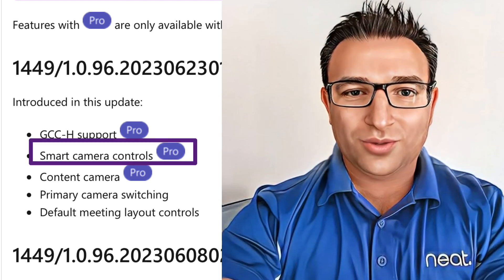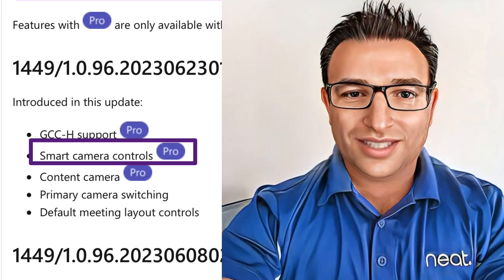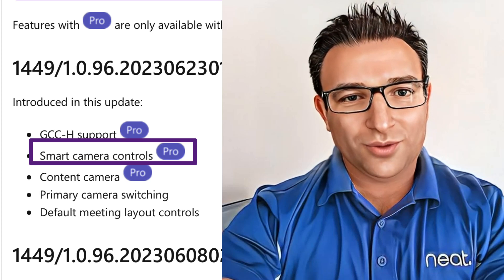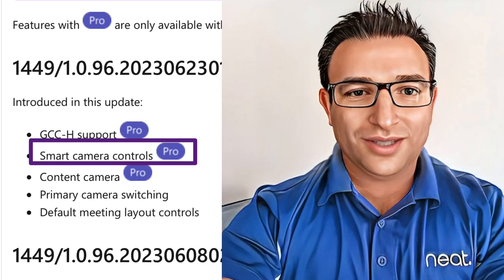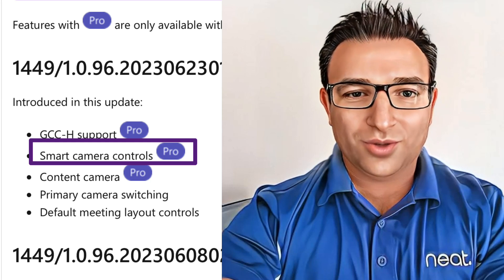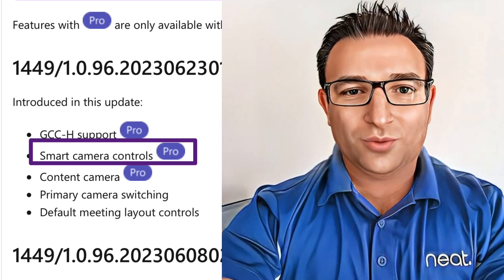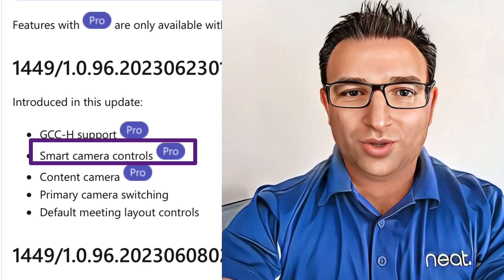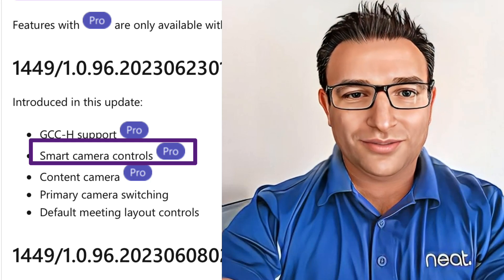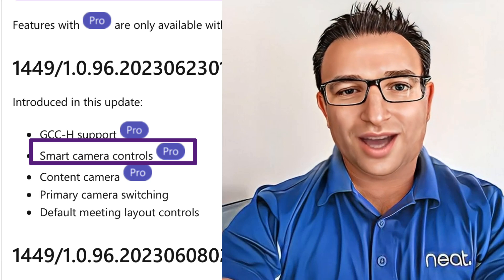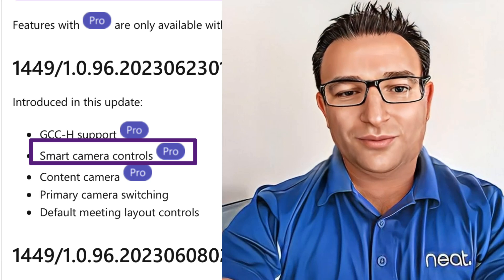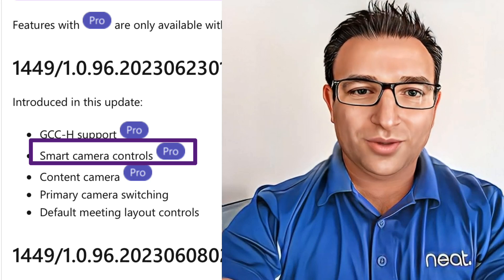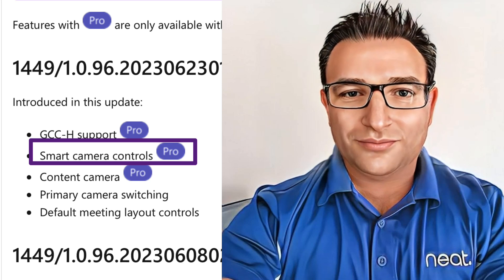Next we have Smart Camera Controls. This will also require a Teams Room Pro license. This is where Microsoft are bringing together all the different OEM naming conventions for their camera controls, such as NEAT Symmetry etc., under the UI in the Microsoft Teams console. To access these camera controls, we need to be in a call.